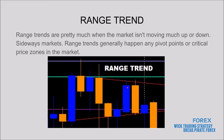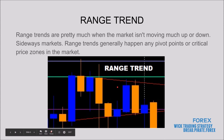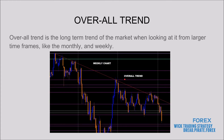A range trend is when the market isn't moving much up or down — it's a sideways market. Range trends generally happen at pivot points or critical price zones in the market where they're collecting contracts and waiting to make a bigger move. As you can see in this example, the market is just wedging itself in a straight line, not making a strong move up or down. These are critical points to be aware of because a major move is more than likely on its way.